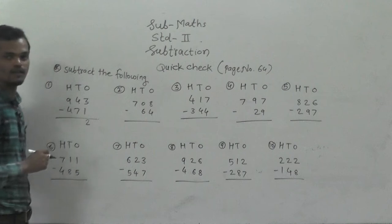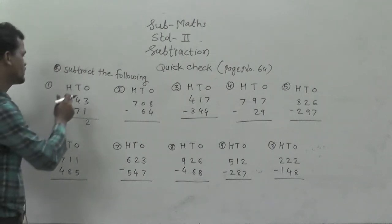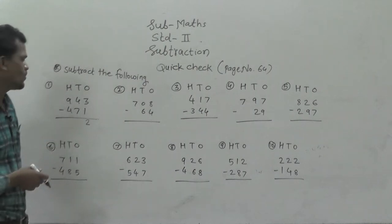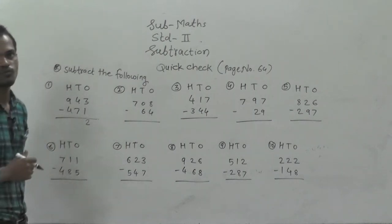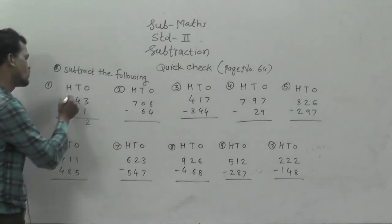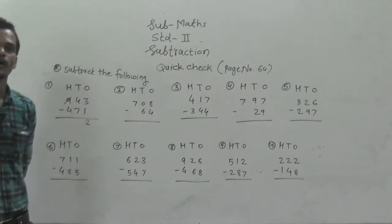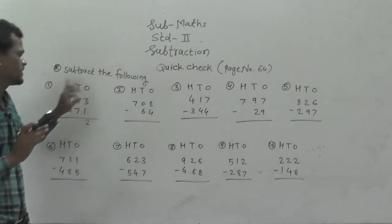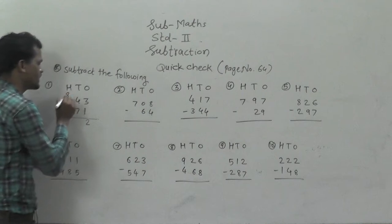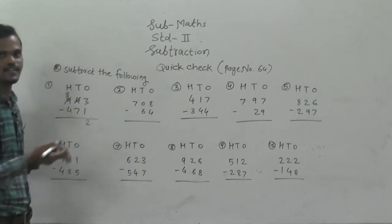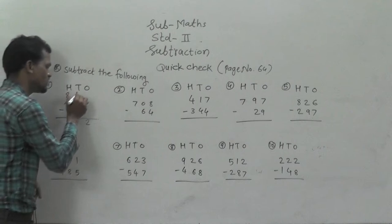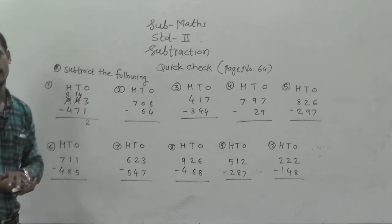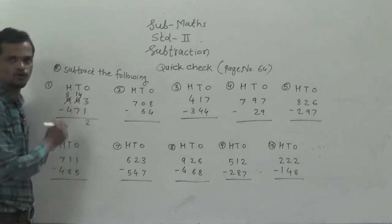Next, 4 minus 7 — is it possible? No, because 4 is smaller and 7 is bigger than 4, so we can't subtract 7 from 4. What to do here? You have to regroup this 9 into 8 and 10 tens. That 10 tens add into this 4, so you will get 14 tens. Now 14 minus 7 is possible.